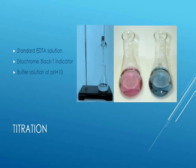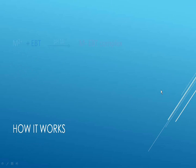Note down the burette reading and take two more readings to get a constant burette reading. Using this reading you can calculate the hardness of the water sample, but first let's see the chemistry behind this color change and how this reaction works.